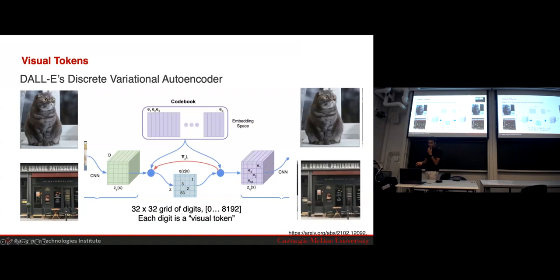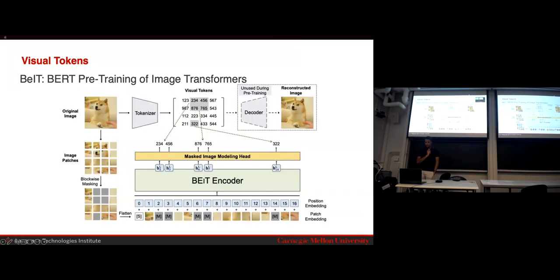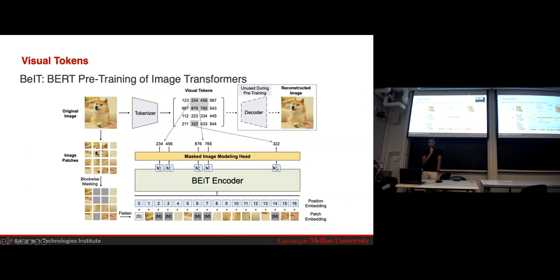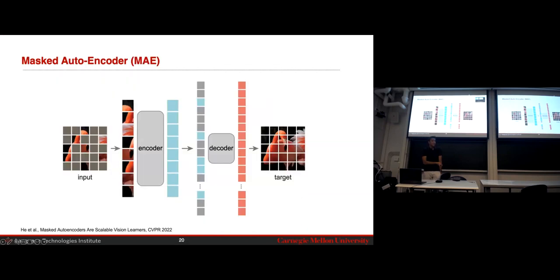The codebook is essentially discrete clusters — you map the image to an embedding space and cluster vectors: this looks more similar to this vector, that looks more similar to that vector. You have two encoders: one finding the visual tokens, the other reconstructing the image. This seems good but especially struggles with text.